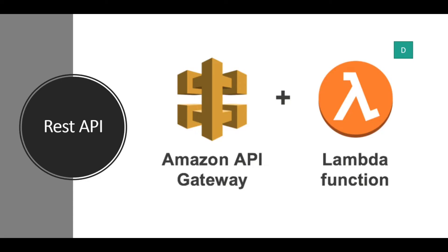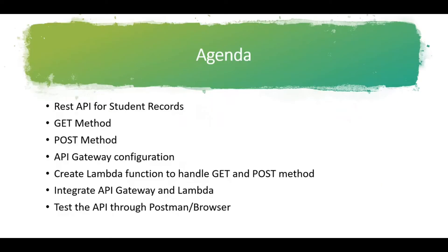Today we are here to learn how to build a REST API using Amazon API Gateway and Lambda function. This is really interesting and very simple — you can build your own REST APIs just like that using these two prime services provided by AWS. To learn this process, let's take an example of building an API for student records.